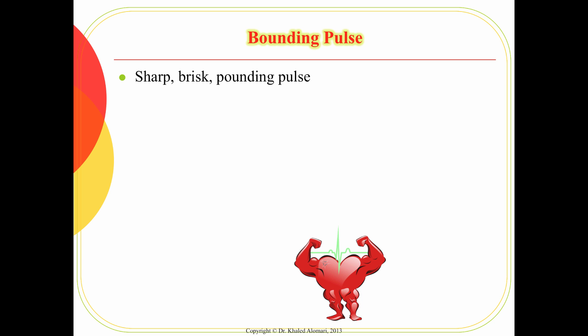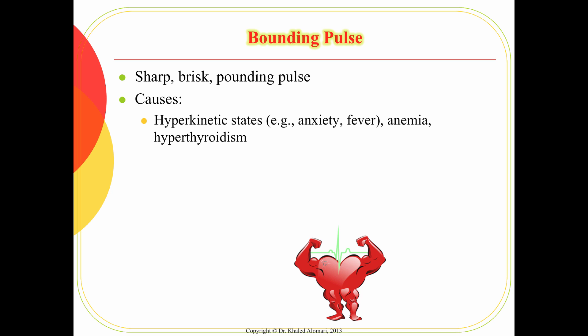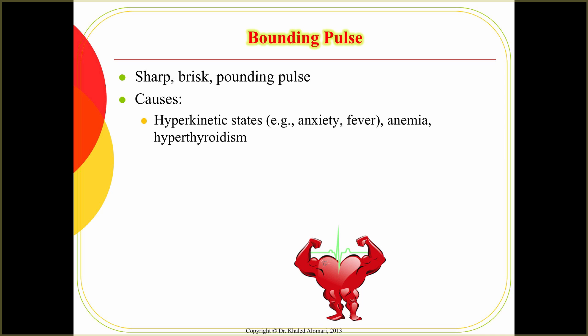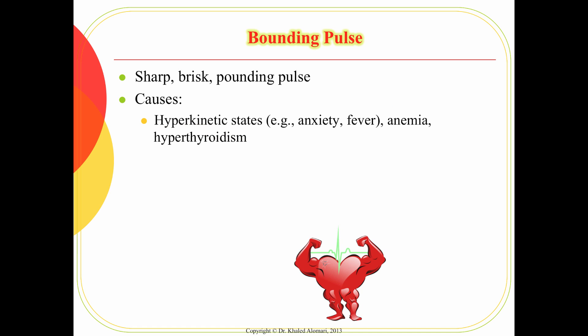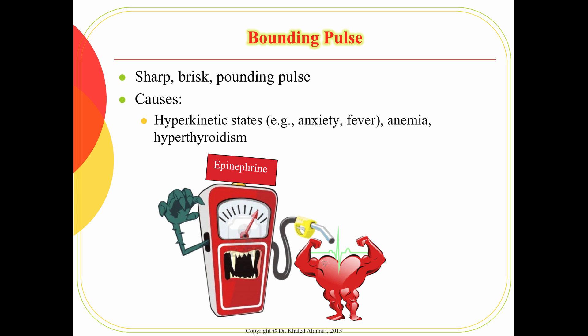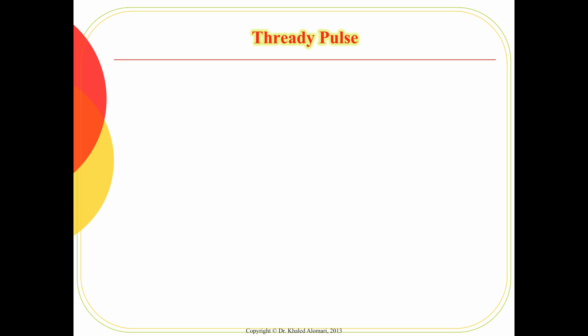As far as palpation, it mainly concerns the pulse. One change is a bounding pulse — when the pulse is stronger than normal. This is not necessarily a good sign. Common causes include increased metabolic demand, hyperthyroidism, fever, and anxiety. Whenever metabolism is elevated, there is a lot of epinephrine being released, which is like fuel for the heart, making the pulse very strong and pounding.